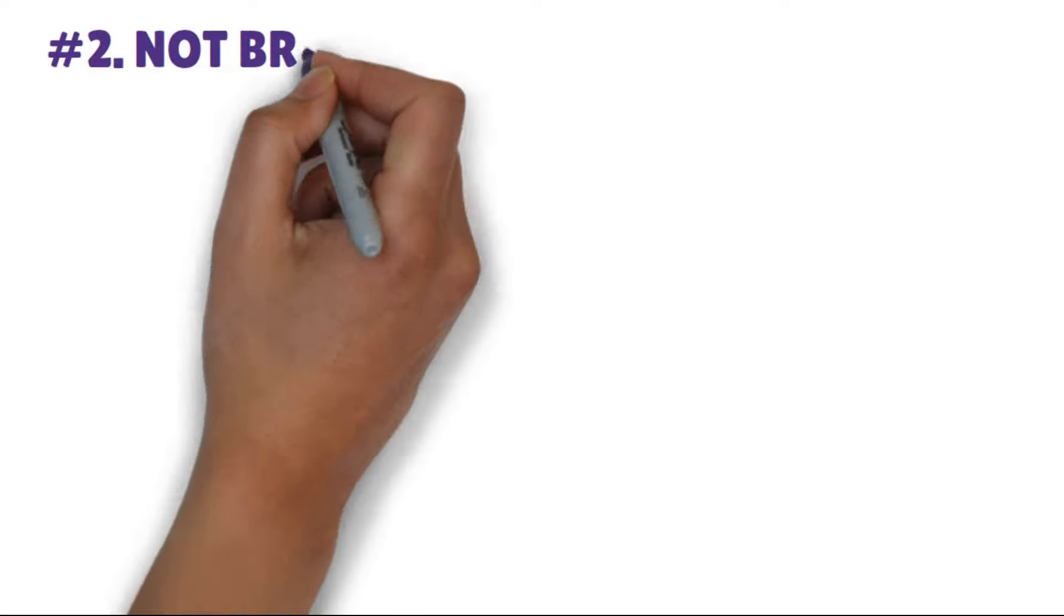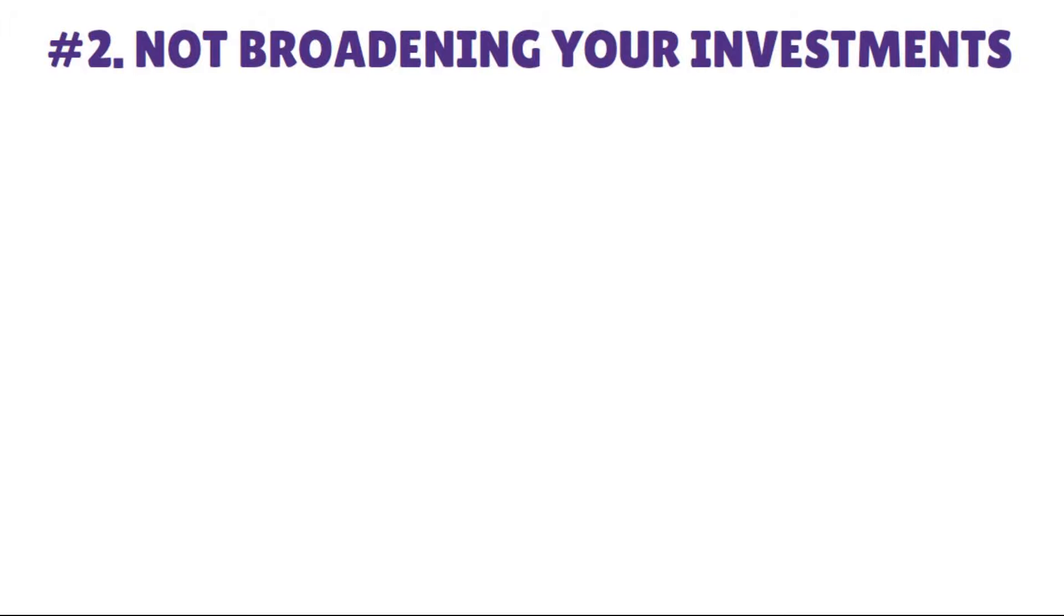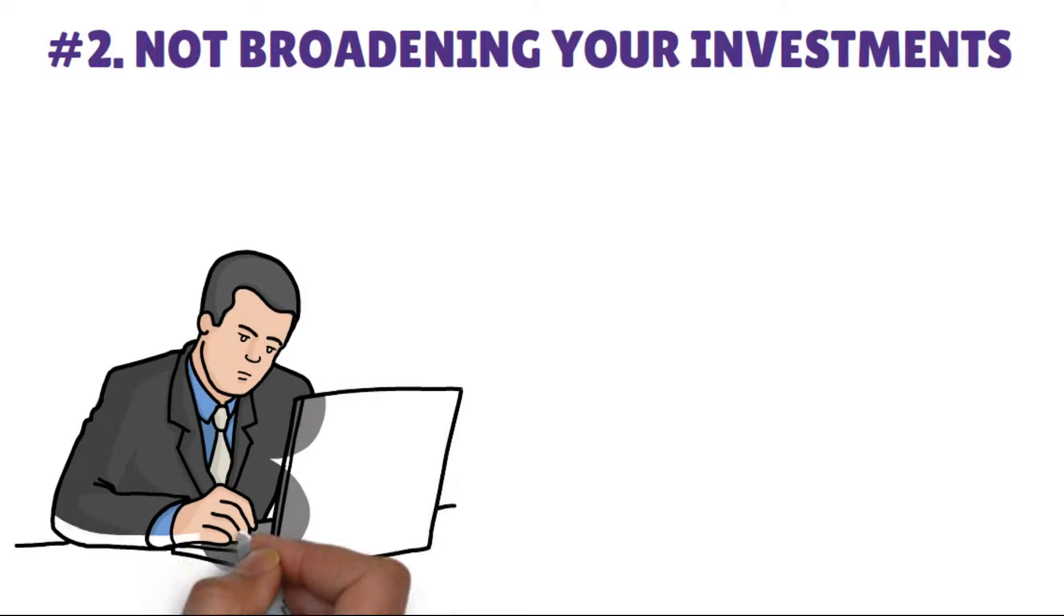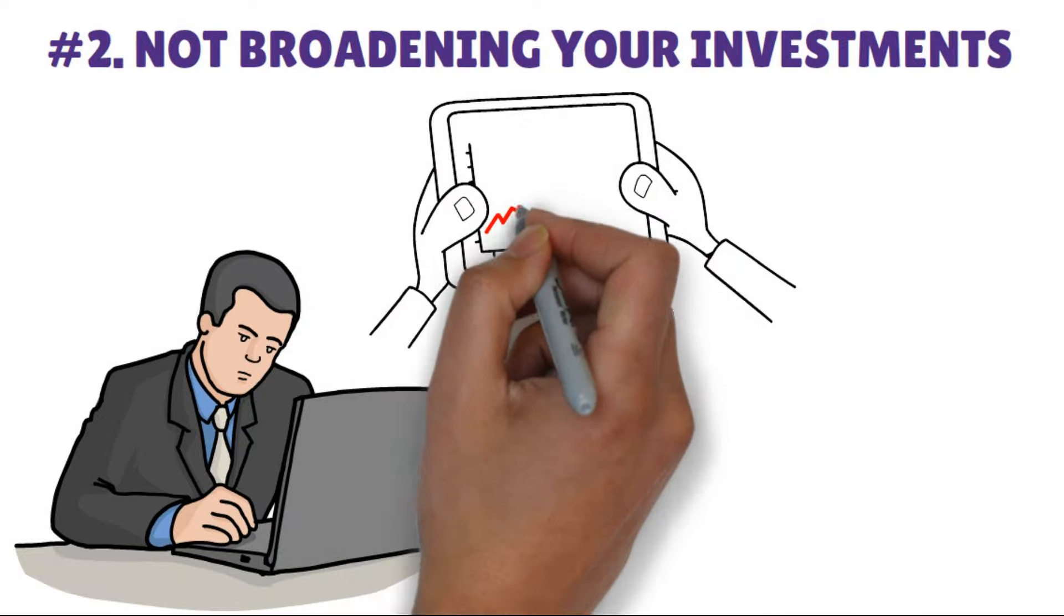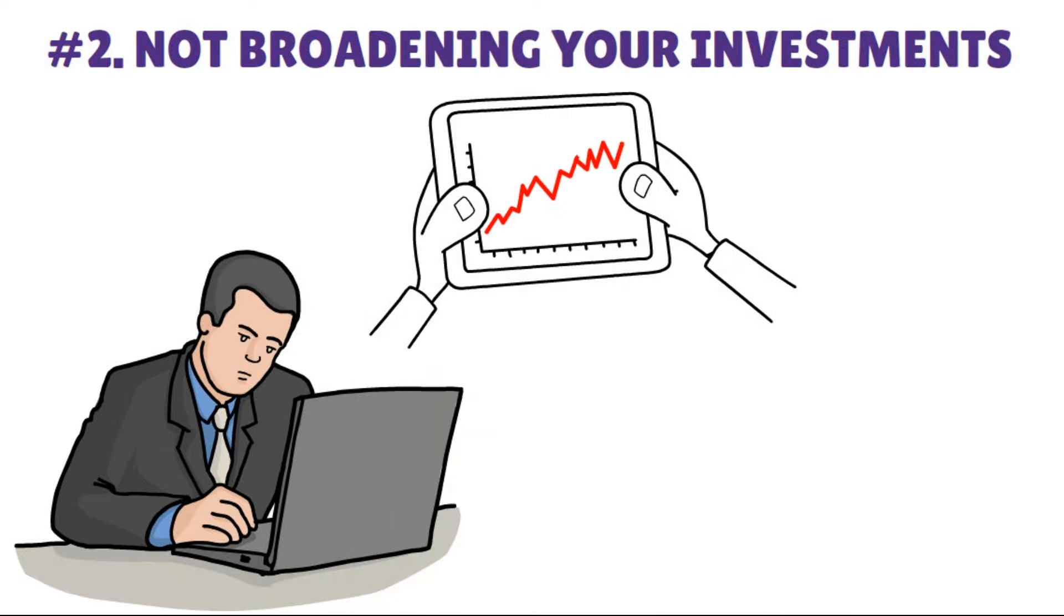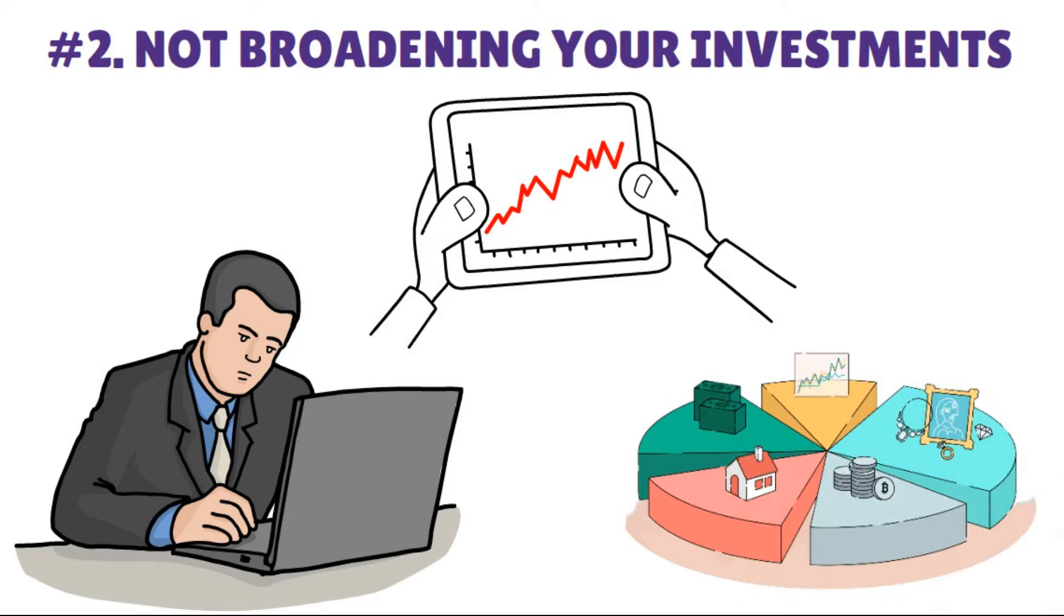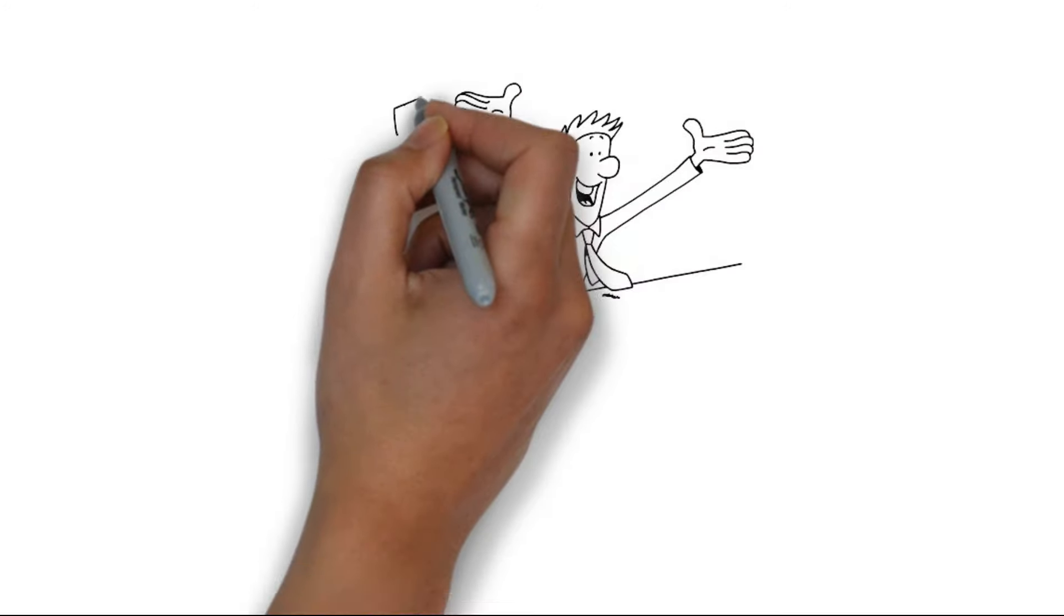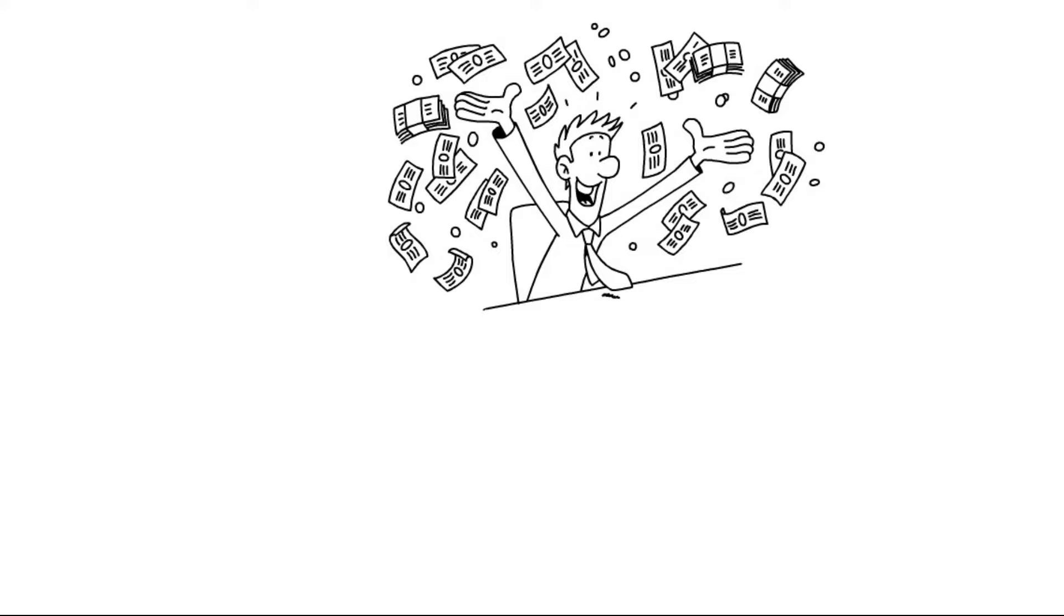Number 2. Not broadening your investments. It is important to exercise caution and not rely solely on a single company for your future financial security. Not diversifying your investments significantly raises your risk level. By diversifying your investments across a range of shares and growth assets, including property, you can increase the potential for consistent and stable returns in the long run.